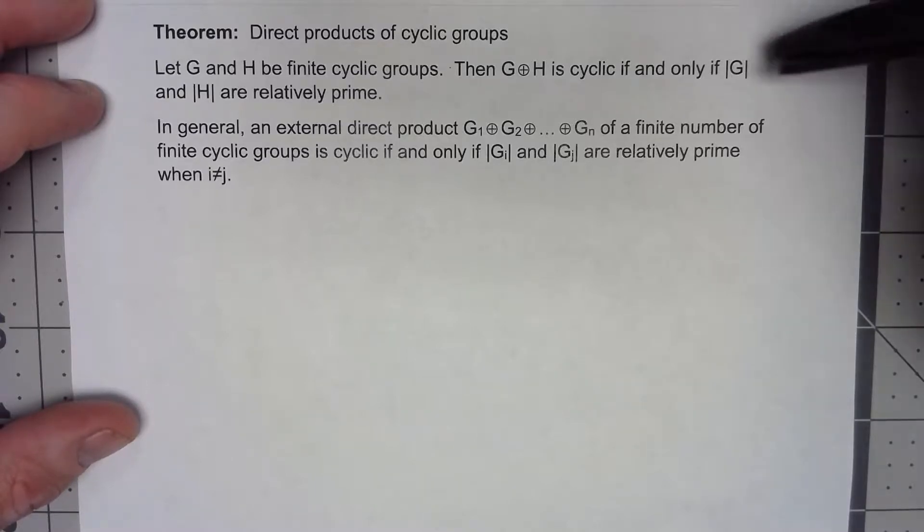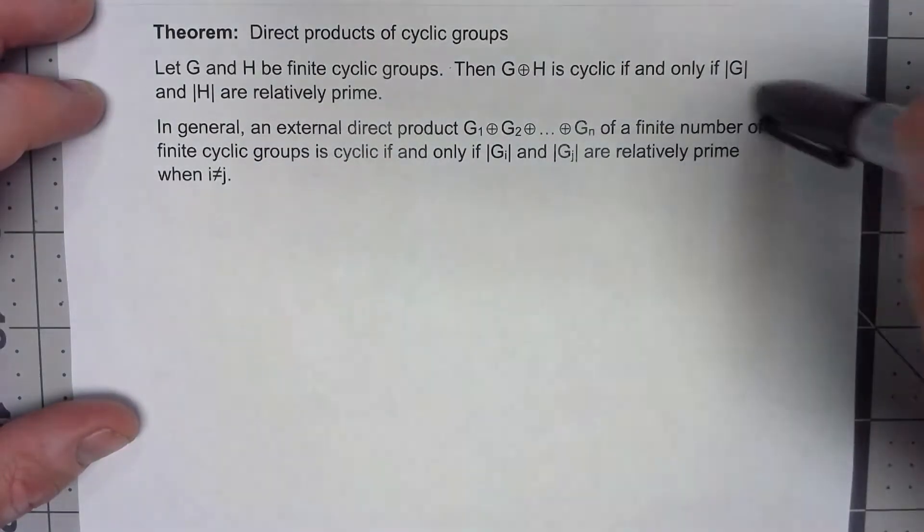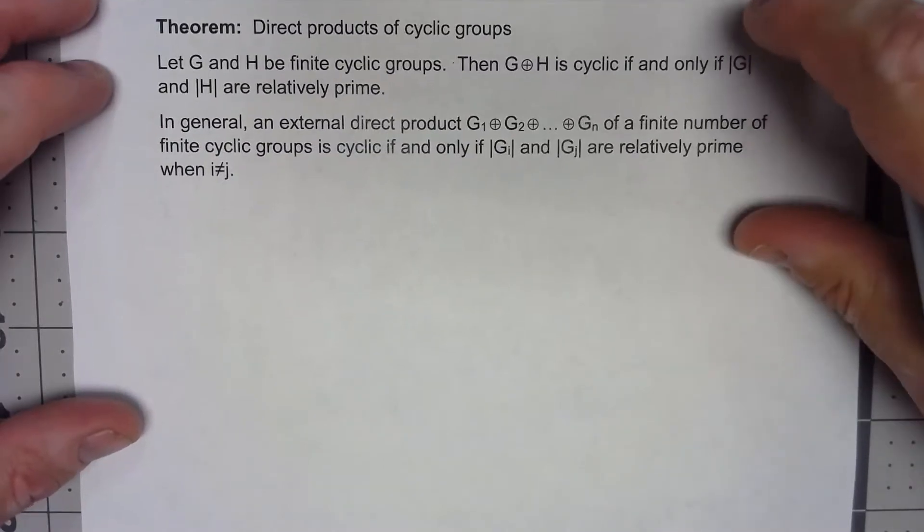It all depends on the orders of those two groups. If the orders of the two groups are relatively prime, then the direct product will be cyclic. If they're not, then it won't be cyclic.